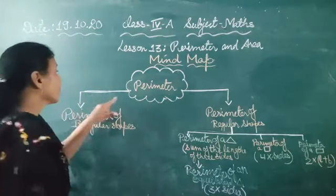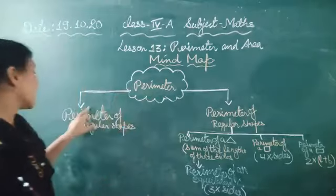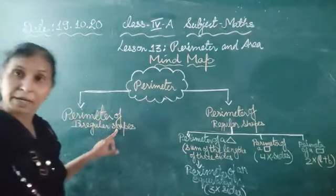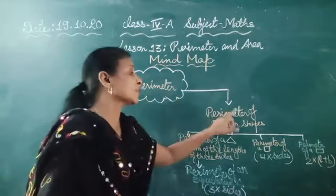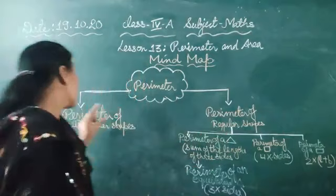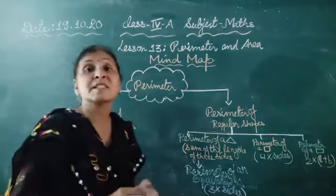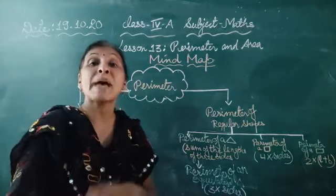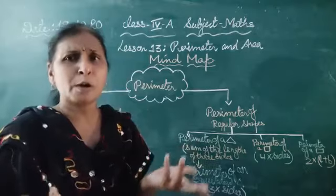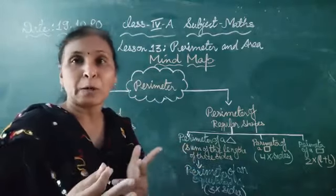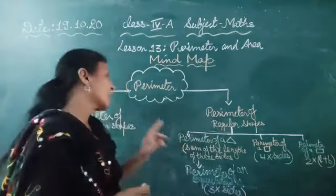Now the perimeter is divided into two parts: the perimeter of irregular shapes and perimeter of regular shapes. Irregular shapes means things like a bangle, leaves — these are all irregular shapes. They don't have a fixed shape.